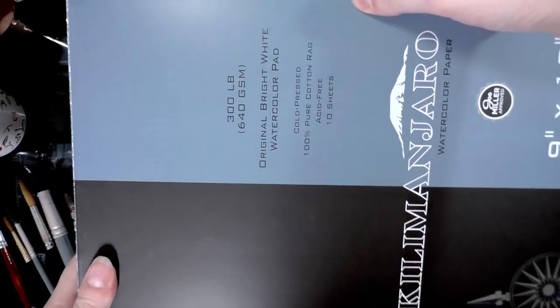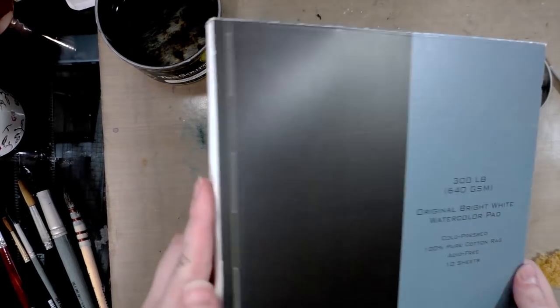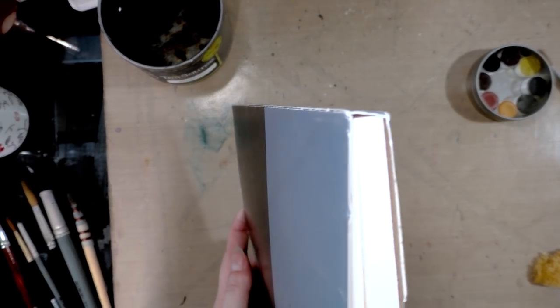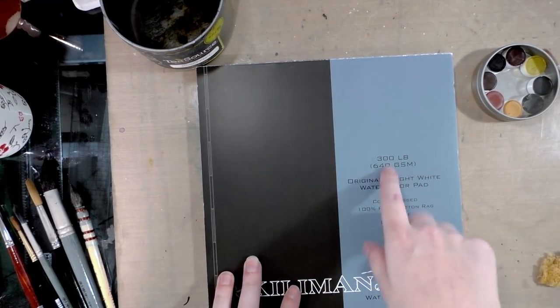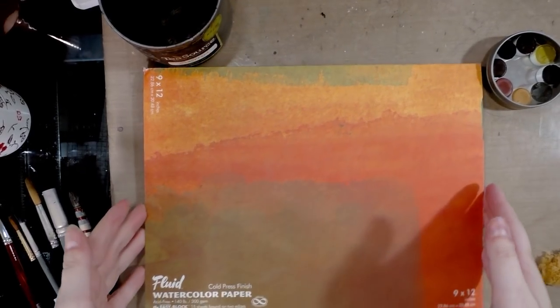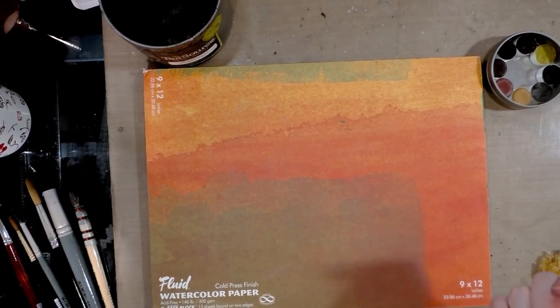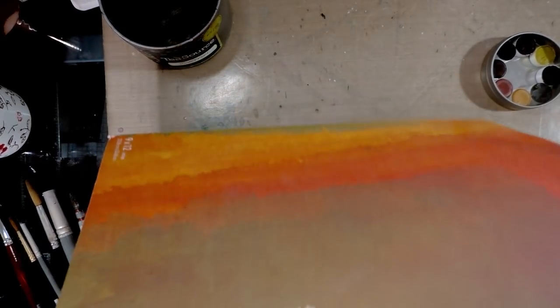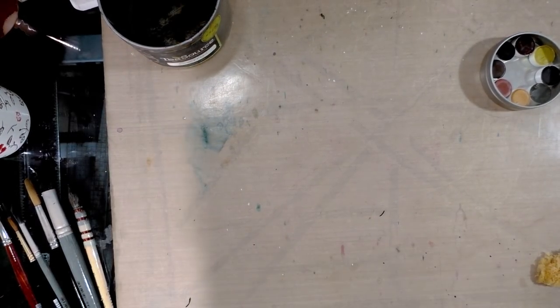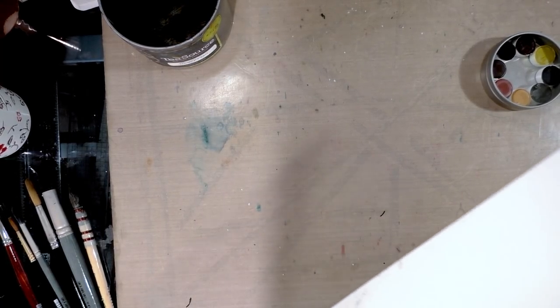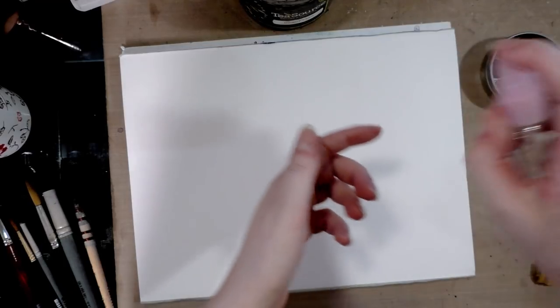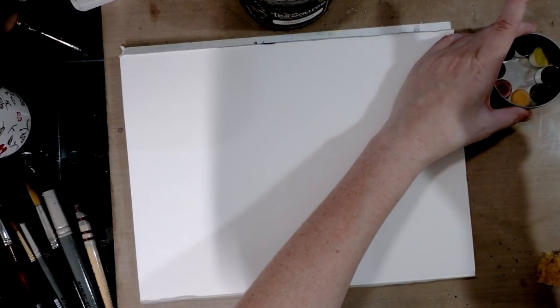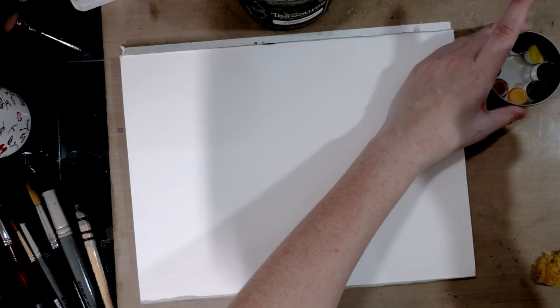We're going to start with the Kilimanjaro watercolor paper. This is a cotton rag. Wait, I don't want to use 300 pound - I thought I have, in fact I know I have, 140 pound. I'll go dig my 140 pound Kilimanjaro up. But before we do that, I can start on the cellulose-based paper, the Fluid Easy Block paper. We've got a big cup of clean water, a little spritzer bottle of clean water, and I'm gonna spritz the paints.